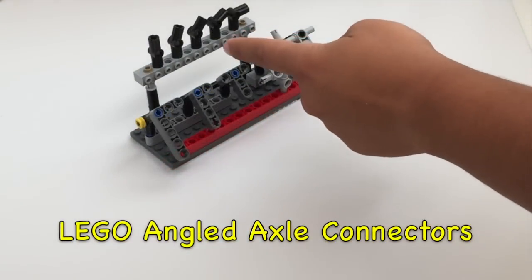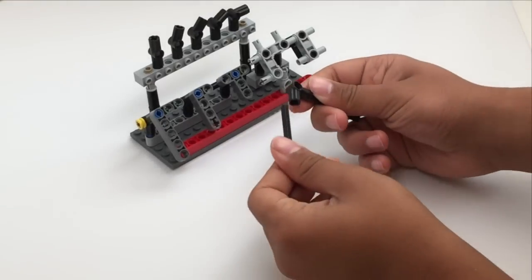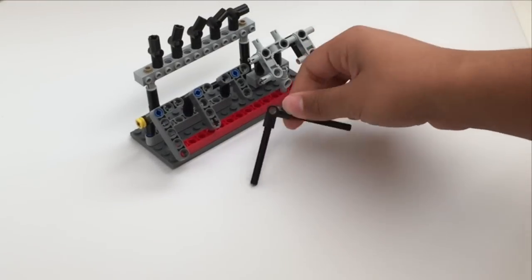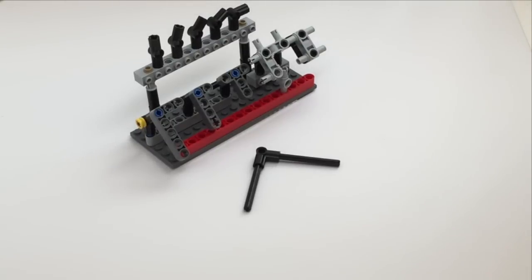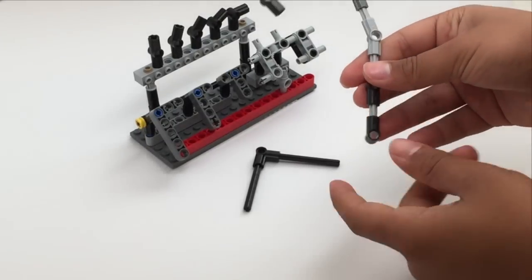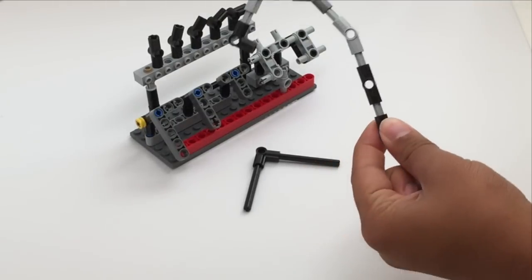Here we have the axle connectors. They're used to connect axles like this, and they come in all these angles, as we have shown in this figure where all of them are connected.